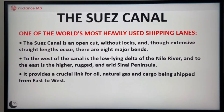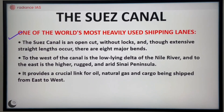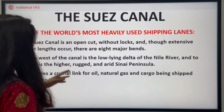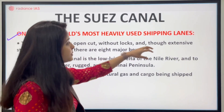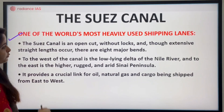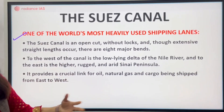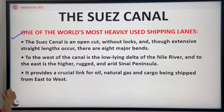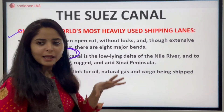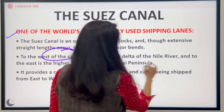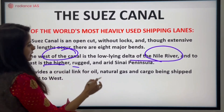It is one of the world's most heavily used shipping lanes. The Swiss Canal has 8 major events where routes are developed and training junctions are made. To the west of the canal we have a low-lying delta region where the Nile River passes, and to the east is a rugged area.